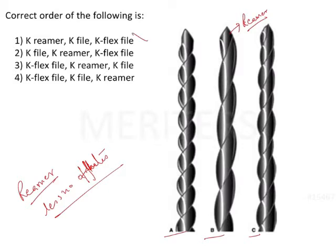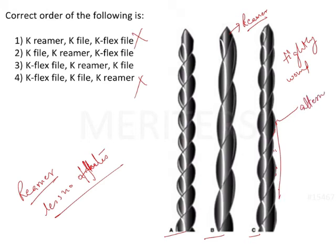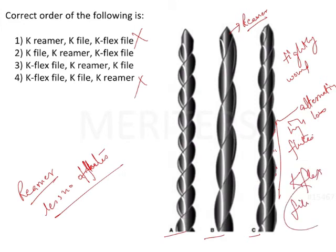Now we will immediately rule out two options — option 2 and option 3. We have to see which one is correct. Now, tightly wound flutes and alternating high and low flutes — these are seen in this instrument here. Alternating high-low flutes are present, so which file is this? This will be the K flex file.